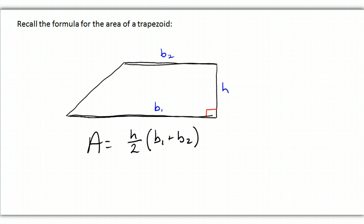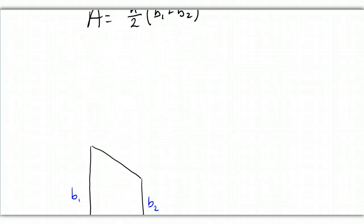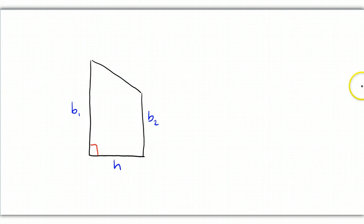All right, well, tip that trapezoid on its side and you get that picture. However, the area is still H over 2 times B1 plus B2. But now H is going horizontally and B1 and B2 are vertically.